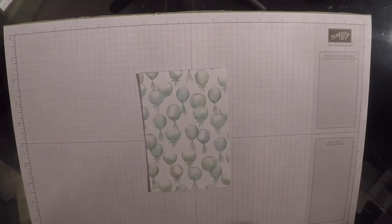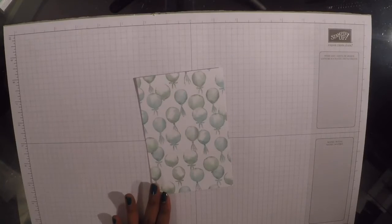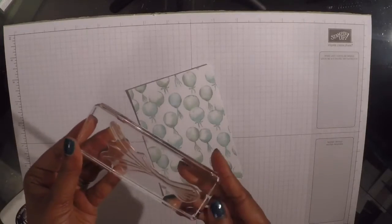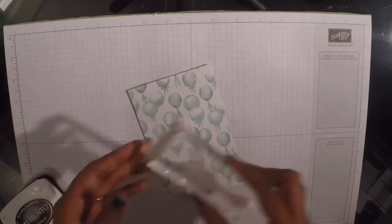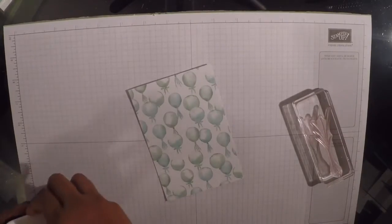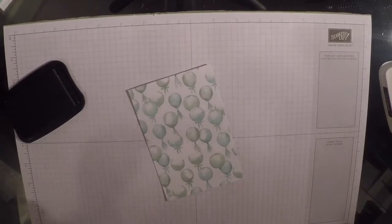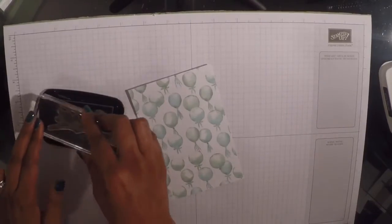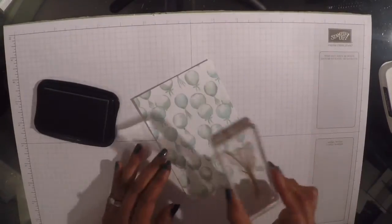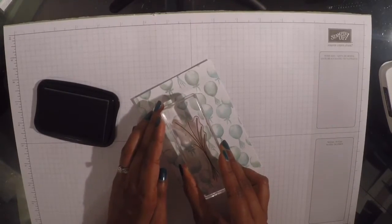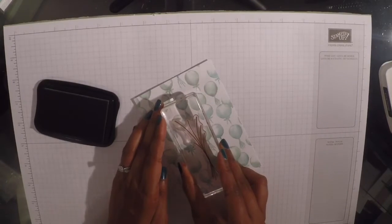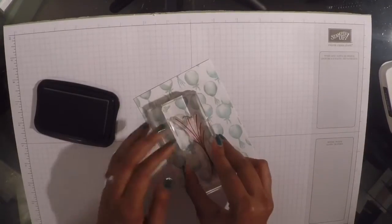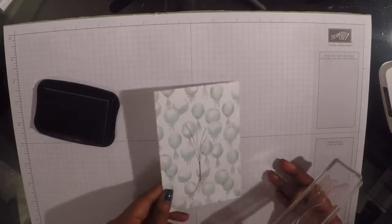So I'm going to start with my balloon DSP and I'm going to start with my stamping actually. So I'm taking my balloon strings that I've already mounted on my clear block and I'm going to be inking that up in my Memento black ink. And I'm just going to be stamping that straight onto my DSP about there and then we can just leave that to the side to dry.